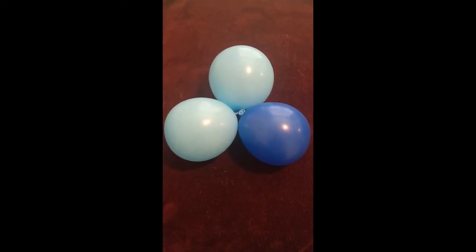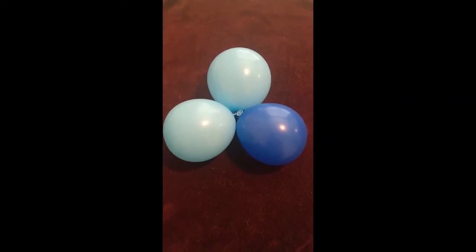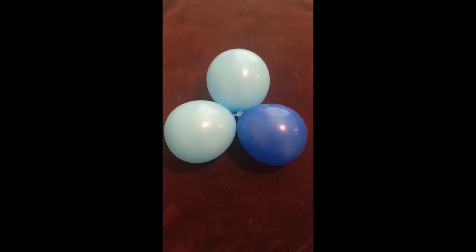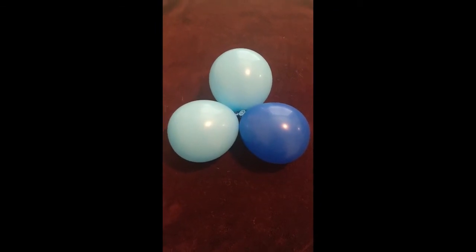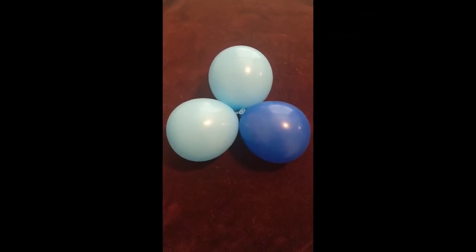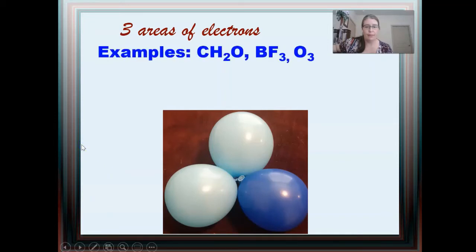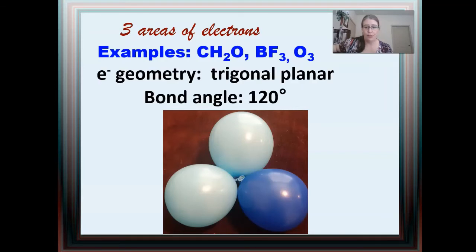With three areas of electrons tied around the center, I want all electron areas as far away from each other as possible to minimize repulsion energy. In this case, I can have a 120-degree angle between each one — this is a trigonal planar electron geometry. Remember, right now all I'm thinking about is areas of electrons, not whether they are lone pairs or bonds. For molecules like formaldehyde, ozone, or boron trifluoride, the electron geometry is trigonal planar, though the molecular geometry may be different.